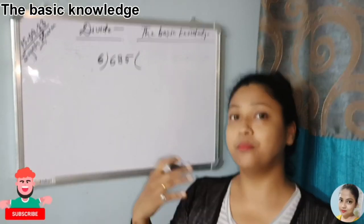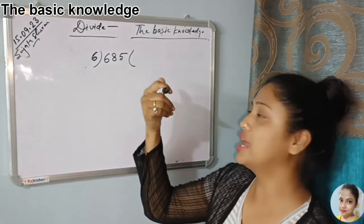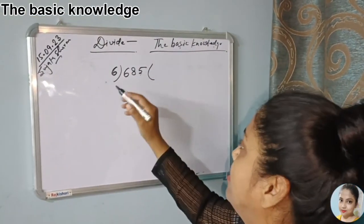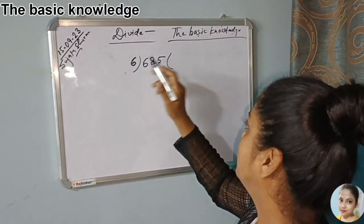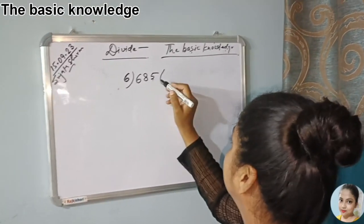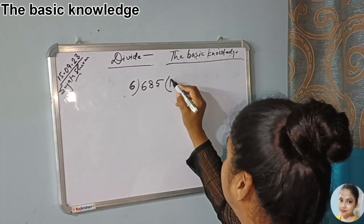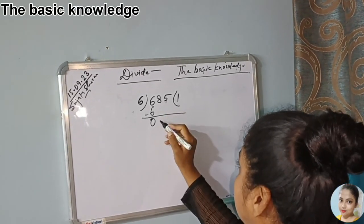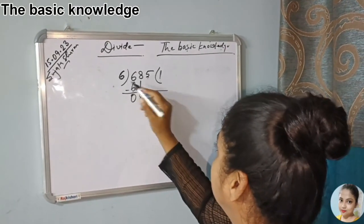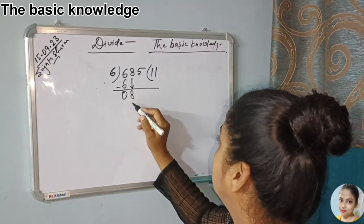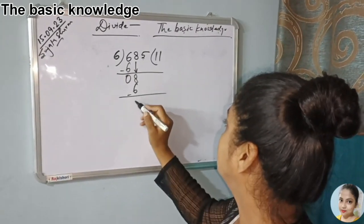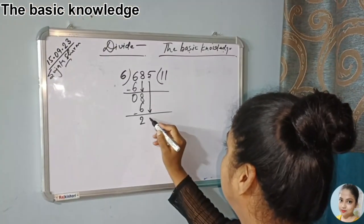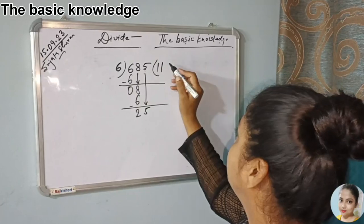Hello friends, welcome back to my channel — Basic Knowledge. Now let's divide the number 685 by 6. So 6 into 6 is 1, 6 minus 0 leaves 8; 6 into 8 is 1, 6 minus 2 leaves 25; and then 5, 6...